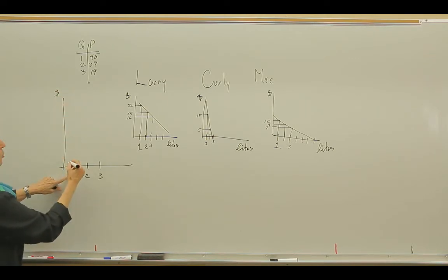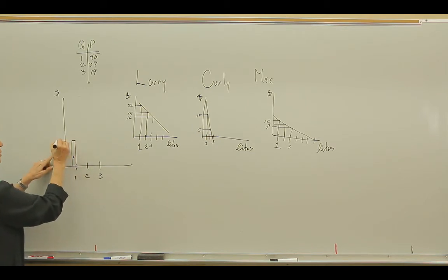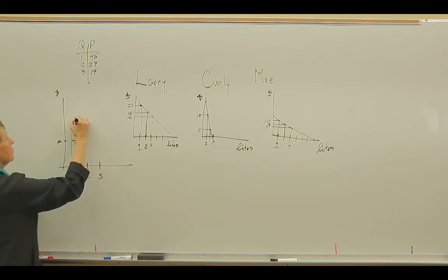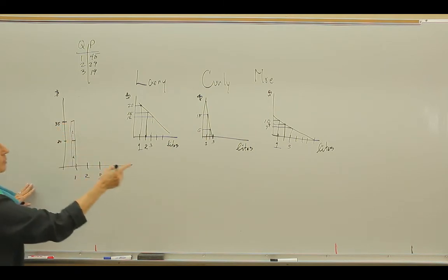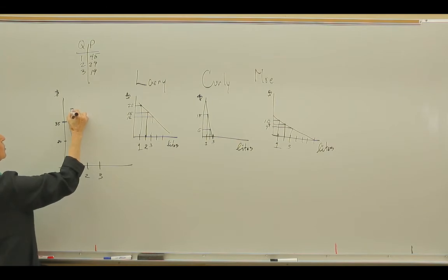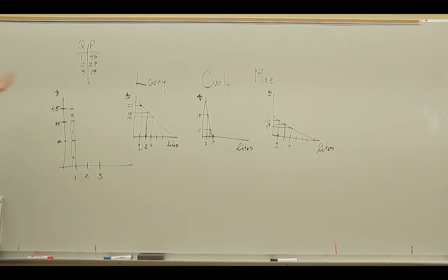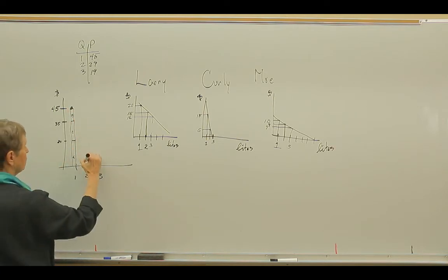Street light number one, we've added up $20 for Larry plus $15 for Curly. So now I'm up to $35. Plus $10 for Moe. So now I'm up to $45. So do you see how I've summed them up vertically? Because each of them can enjoy the street light. It's non-rivalrous. There's the first street light.